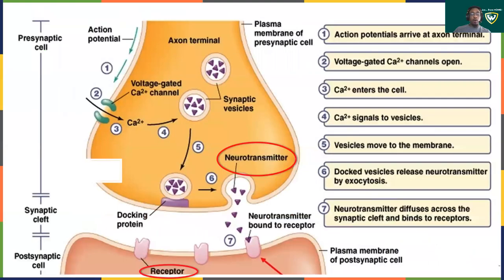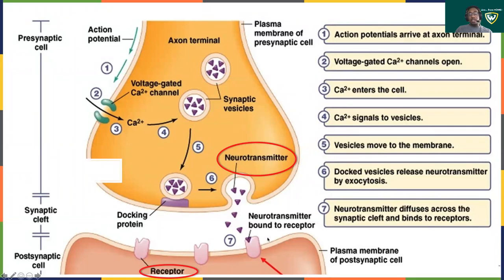If you recall from our video in chapter three about the synapse, you will remember that there are neurotransmitters, which are substances released from a presynaptic neuron into a synaptic cleft and then bind to receptors on a postsynaptic neuron so that the neuron can fire or perhaps be inhibited. After a neurotransmitter has done its job, there is a process of recycling called reuptake, where the neurotransmitter is taken back into the presynaptic neuron so it can be used again.